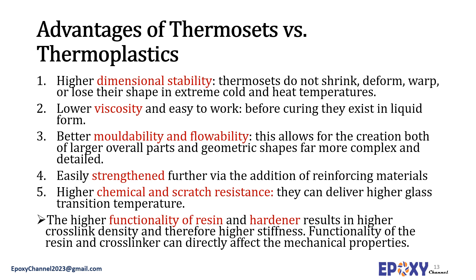Thermosets can be further strengthened by incorporating reinforcing materials into their structure. They also show higher chemical and scratch resistance, making them more durable. The higher functionality of the resins and hardener in thermosets leads to higher crosslink density and consequently higher stiffness. The functionality of the resin and crosslinker can directly affect the mechanical properties of thermosets. Overall, all these advantages make thermosets preferable for various applications where dimensional stability, strength, and durability are essential requirements.